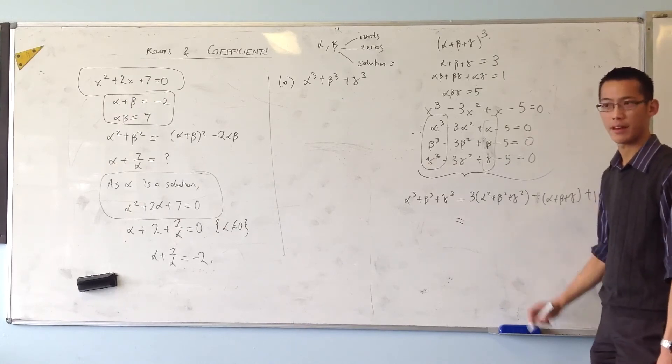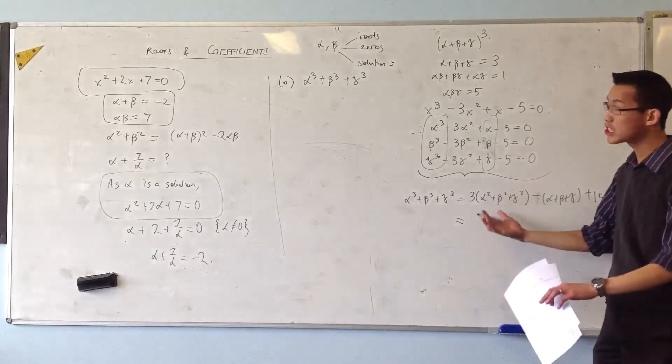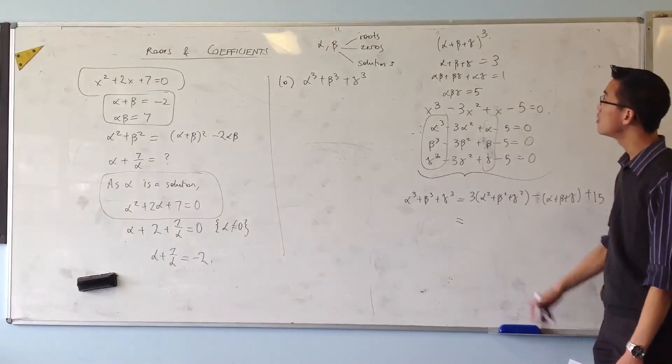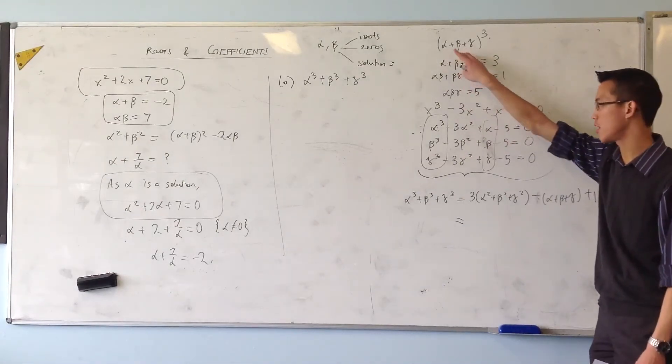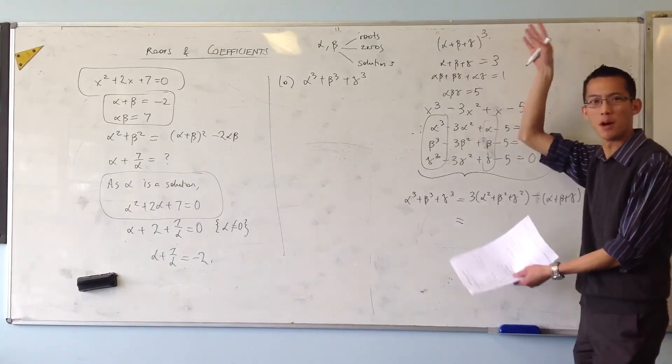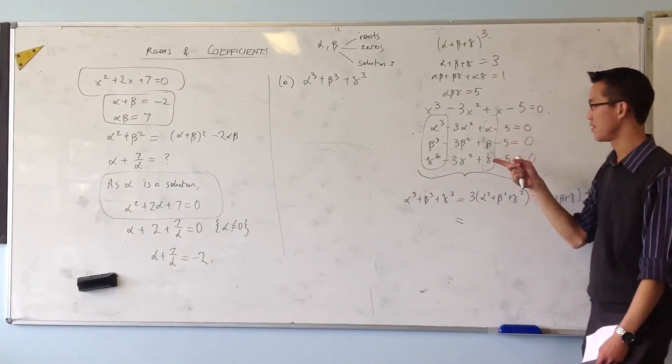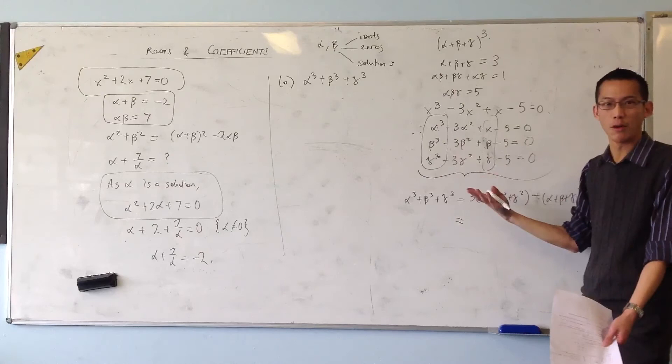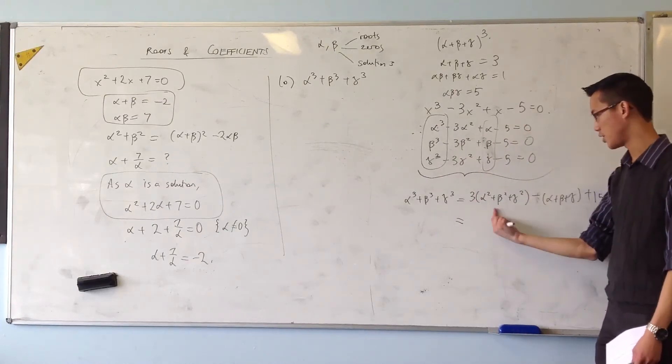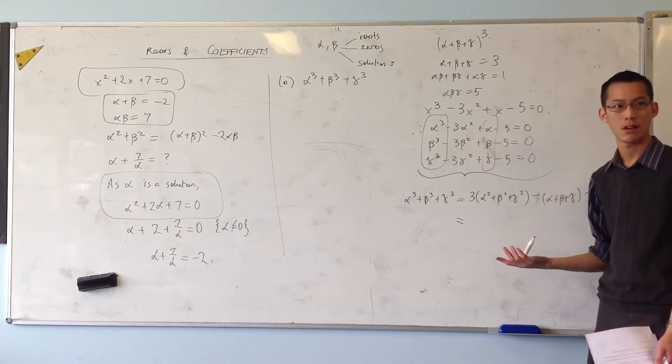Now which way is better? When you cube it all out, I don't know, I think you end up getting a similar number of lines. However, I think it's probably less error prone and more elegant and more thoughtful to actually do it this way, especially seeing as you've got these results already. This one? Any questions? Does that make sense?